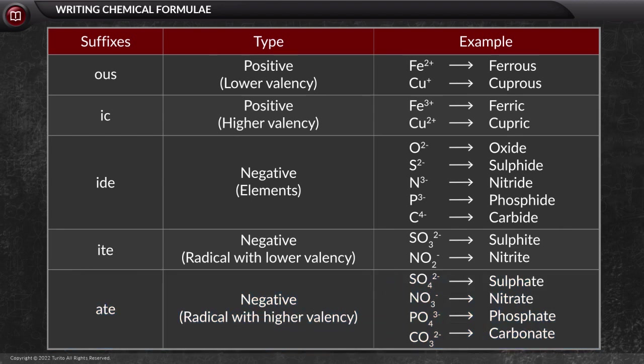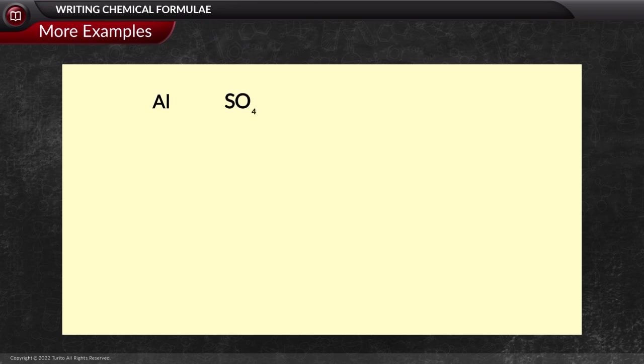Let us see a few examples including radicals. Aluminium and sulfate have a valency of 3 and 2, respectively. On criss-cross, we get the formula of aluminum sulfate, which is Al2(SO4)3.